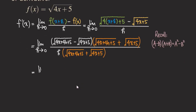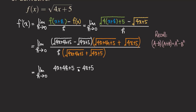Squaring the first radical gives us the stuff inside without the radical: 4x + 4h + 5. Then we also square the second radical to get 4x + 5, with a minus sign between. It's important to put a pair of parentheses here because we have two terms and a minus sign in front. That should not be forgotten. For the denominator, just leave it: h times all that stuff.